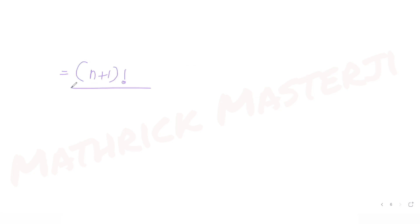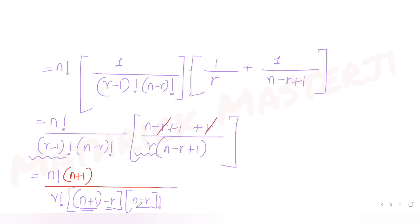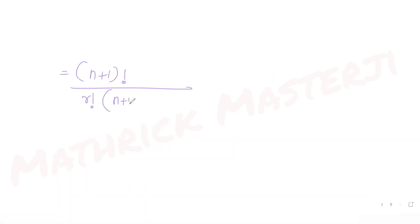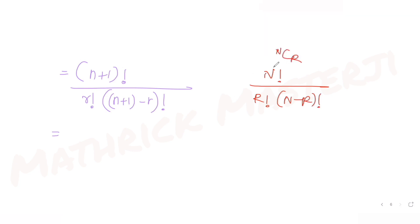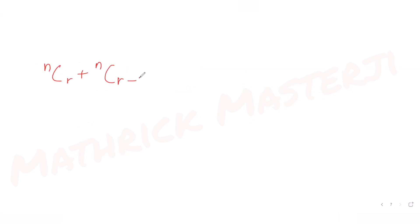This gives (n+1)! / (r! × (n+1−r)!), which is exactly the form of n+1Cr. So the rule is: nCr + nCr-1 = n+1Cr. Whenever the power is the same and the base is reduced by 1, the result has the power increased by 1. So nCr + nCr-1 = n+1Cr.